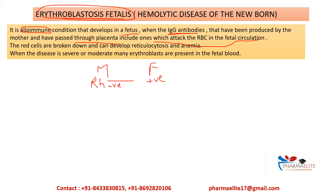When the RH antigen enters the mother's blood during delivery, an immune response is generated and antibodies against the RH antigen are produced. If the mother conceives a second time and the fetus is again RH positive, these anti-RH antibodies can cross the placenta — since IgG antibodies can cross the placenta — and enter the fetal bloodstream. There, the antibodies form a complex with the RH antigens.